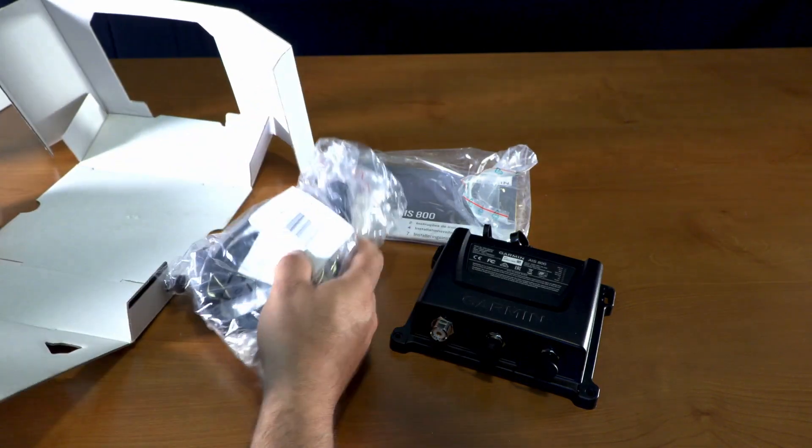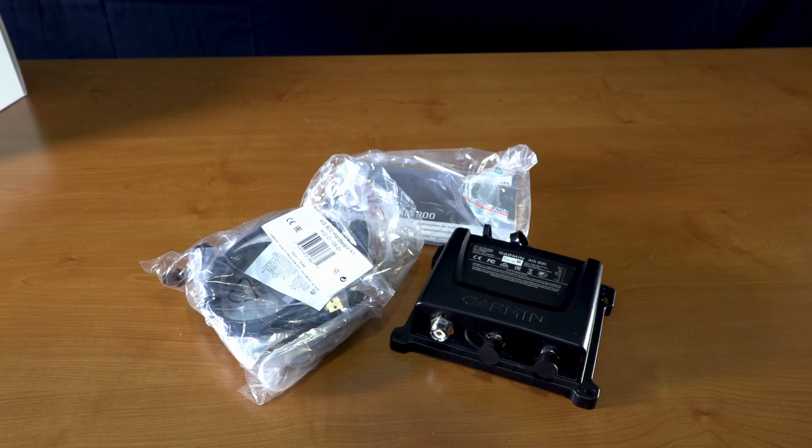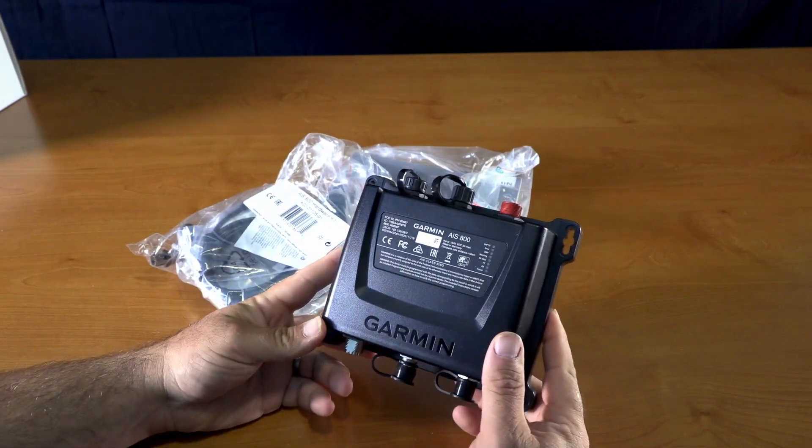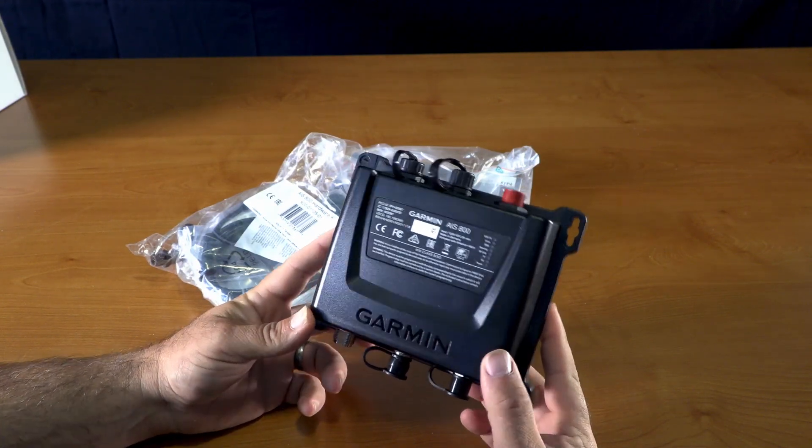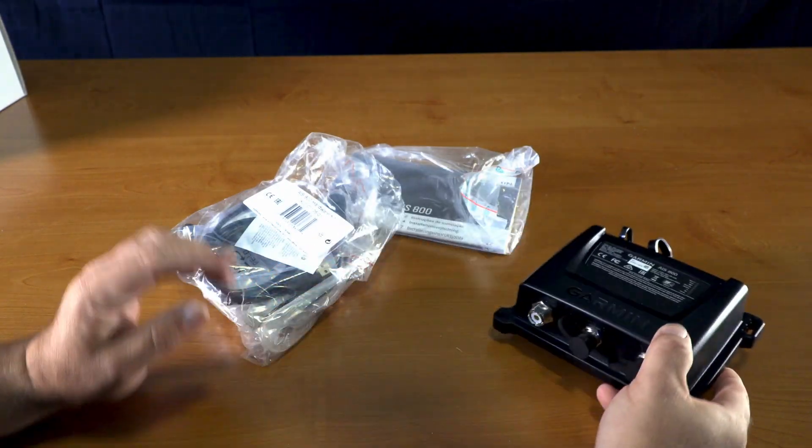Manual and a box of accessories. Alright, the Garmin AIS 800 is a transmitting unit. Sends your data to other boats.